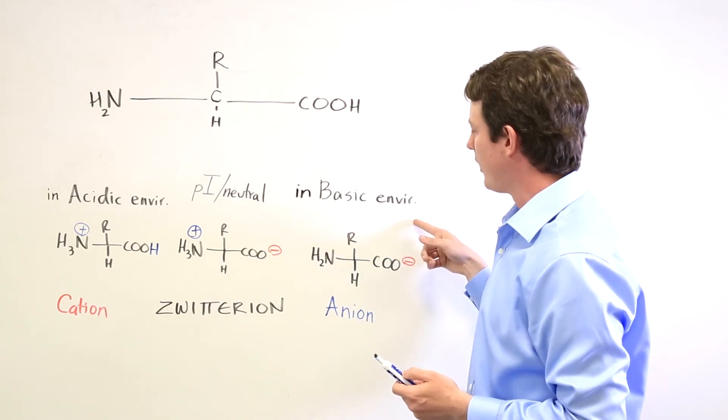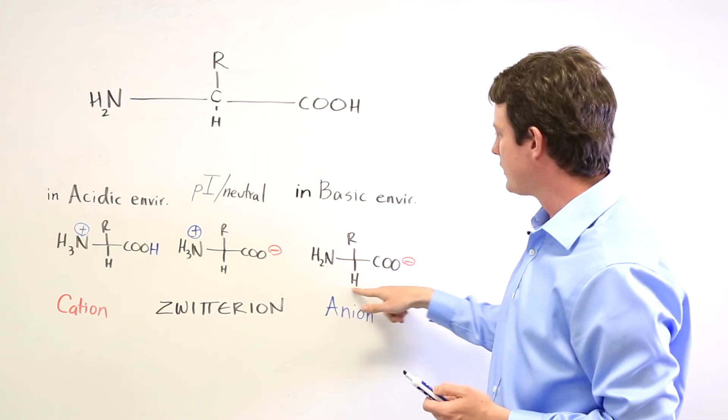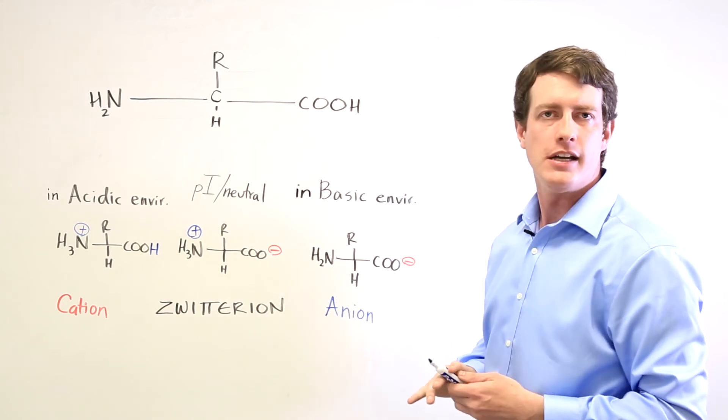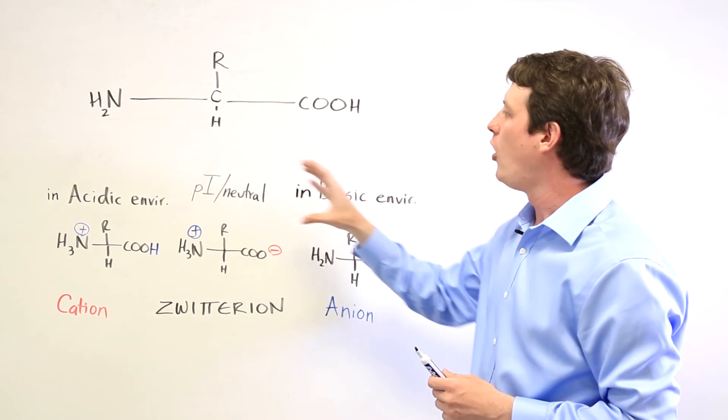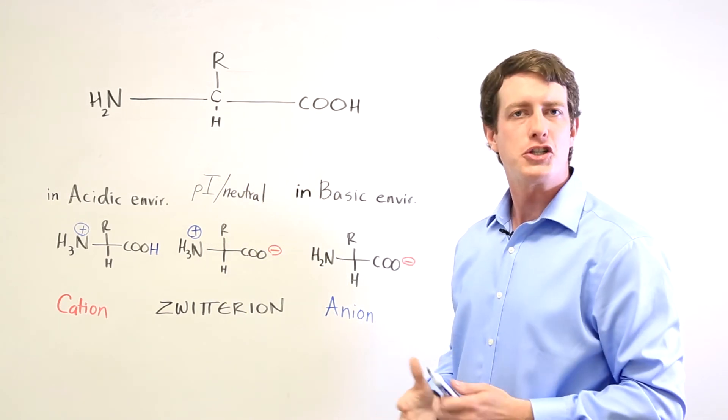And in a basic environment it ends up losing the proton from a carboxylic acid and so it turns into the anionic form of the amino acid. So notice that all three of the forms you actually see in nature are all charged in various ways.